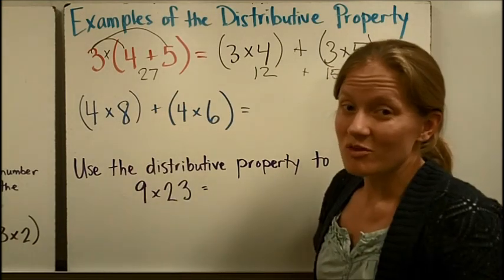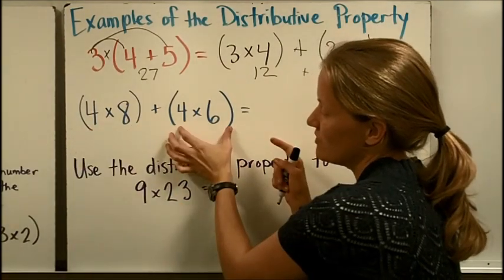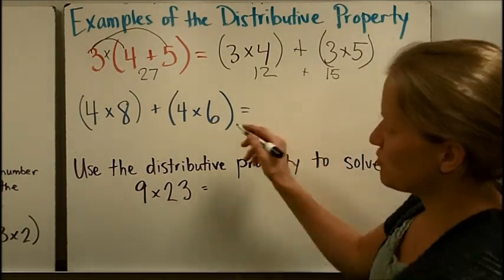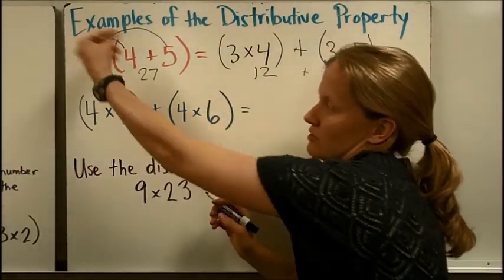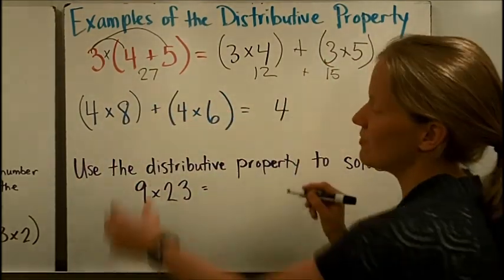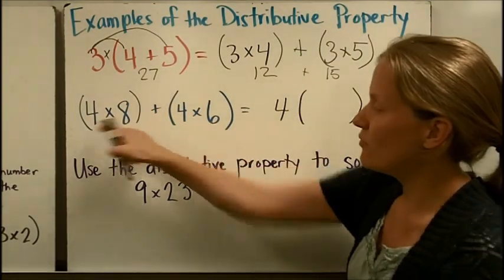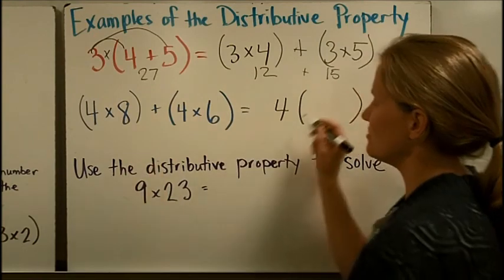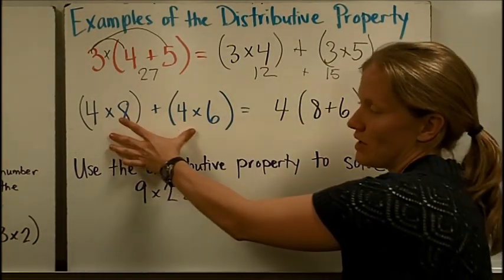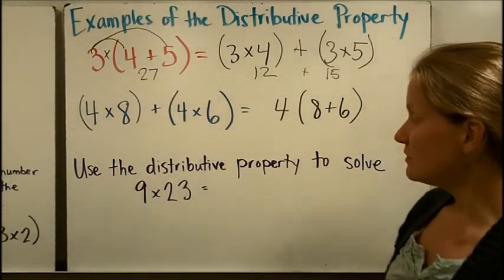Here, we can work the distributive property backwards. We can see that both of these, inside both of these parentheses, we're multiplying four times something. So four, we could sort of pull it out. Here, we're distributing it over on this first problem. We could sort of pull a four out, and think about that this would give us the same answer as if we multiplied the four times the sum of these two numbers, eight plus six. So when I evaluated or simplified this, it would give us the same as this here.